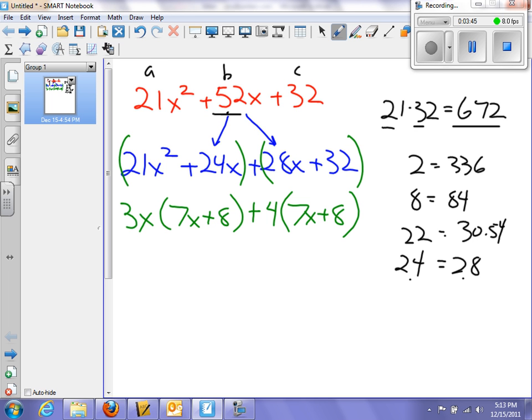Well, now I can employ what I call the reverse distributive property, because I have 7x plus 8 in both parts of my expression here. So I'm going to go 7x plus 8, pull that out, and that leaves me with 3x plus 4. Bingo! My quadratic expression up here has now been fully factored into that. And that's how you do it.